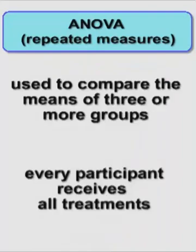The repeated measures ANOVA is just like the other ANOVAs. It's used to see if there's a significant difference somewhere between the means of three or more groups. The difference between repeated measures is that every participant receives all treatments.